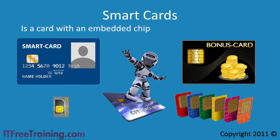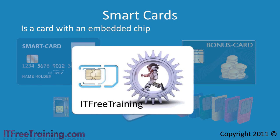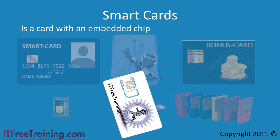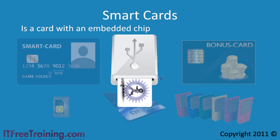Smart cards can vary in design. A blank one is shown here. Like an inkjet printable DVD, companies have the option of printing on the smart card. This can include such things as their own logo and information such as the owner of the card. The smart card is then put into a reader, either an external one as shown or an internal one built into some laptops.